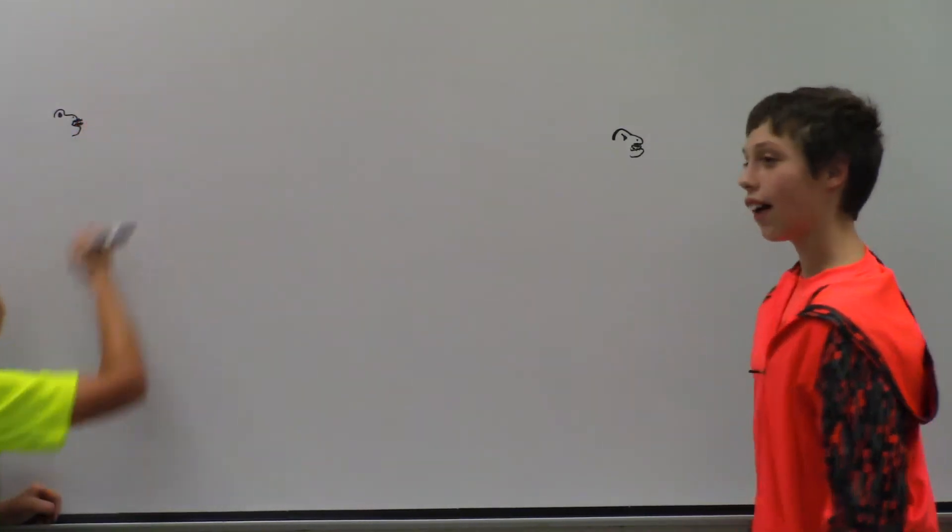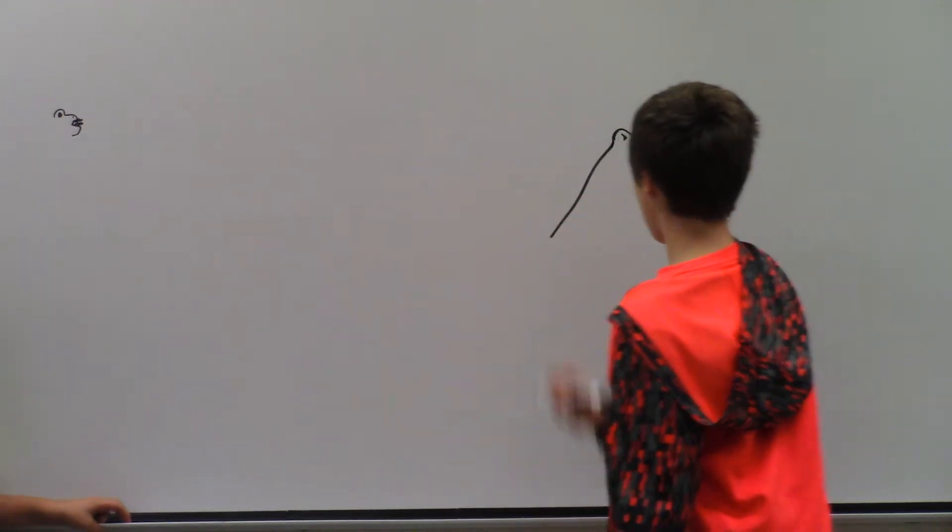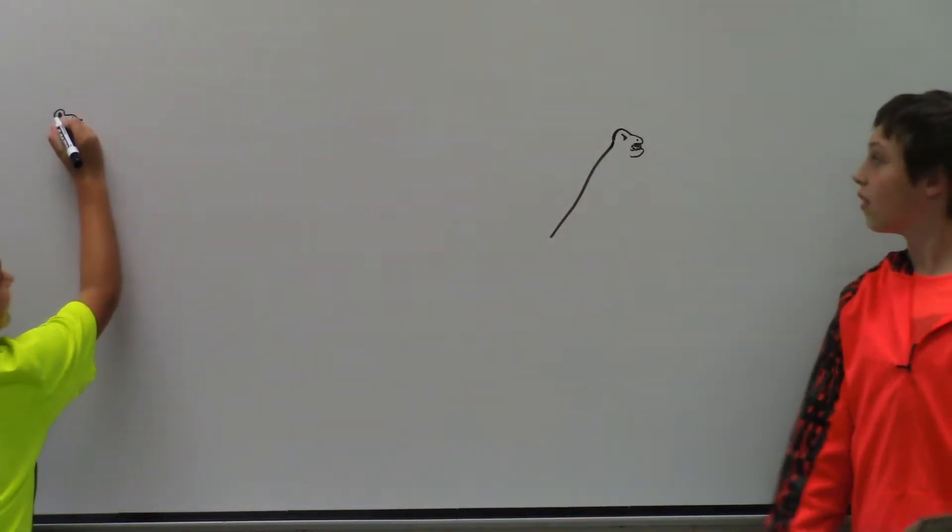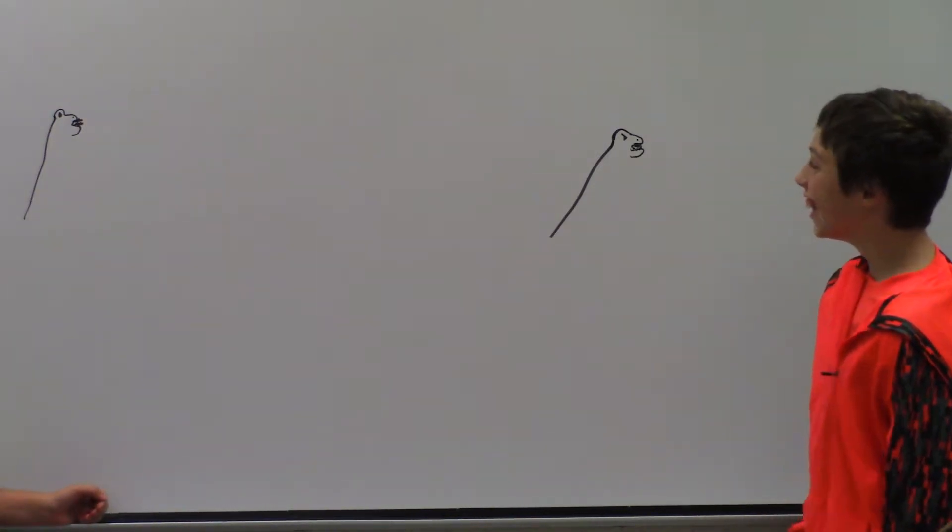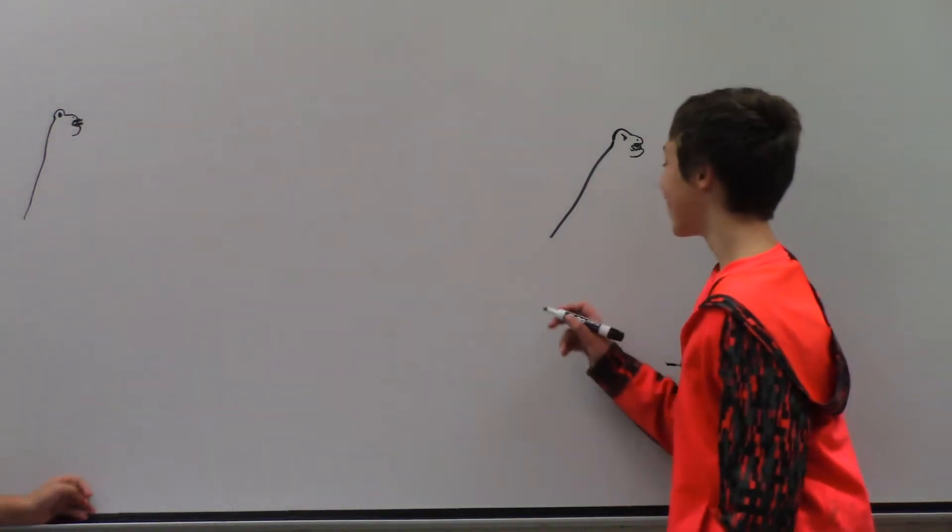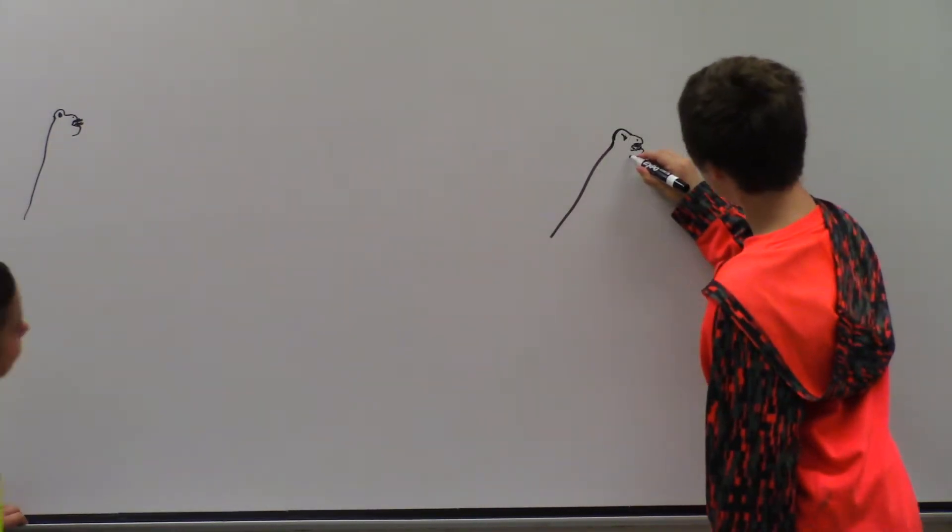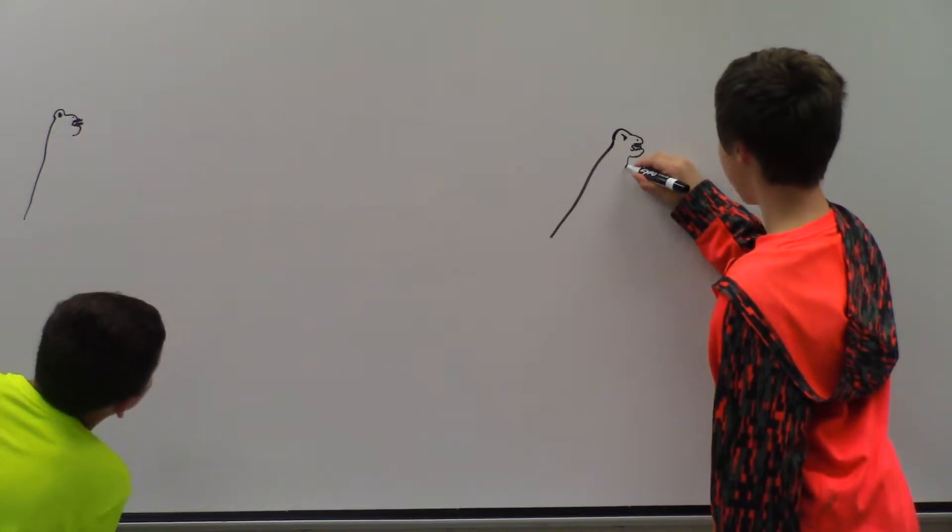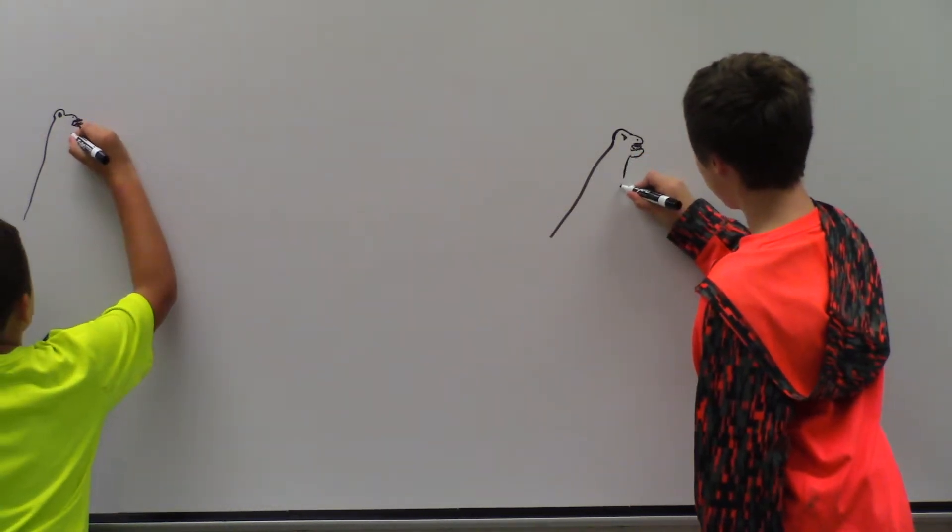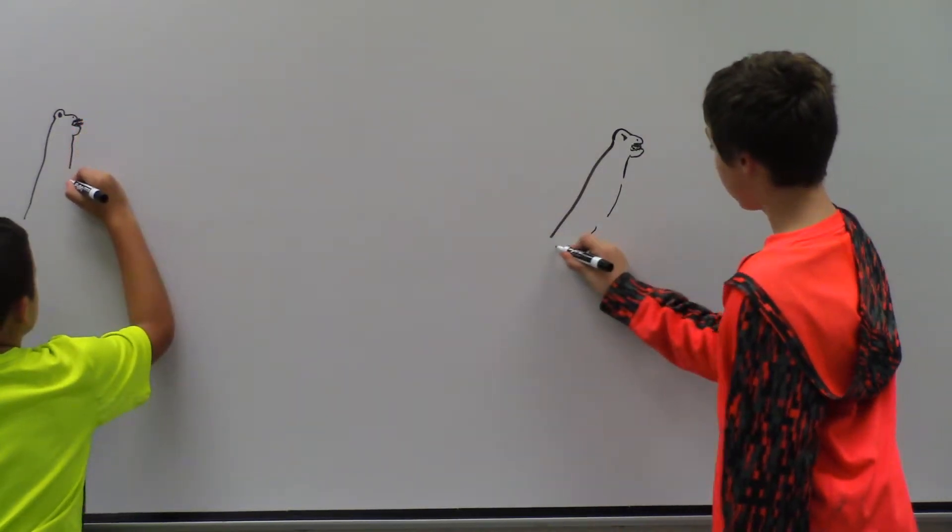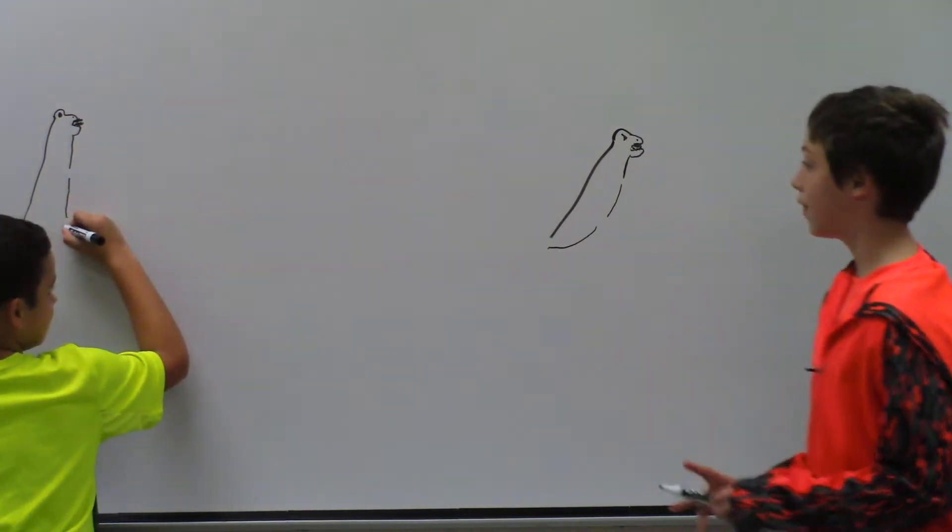Now here's probably the easiest part. For the back, just do a long line. What you want to do is just do like a downward line with two spaces somewhere. Please don't make them right next to each other. And then you want to leave space for the tail.